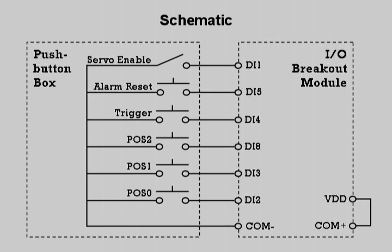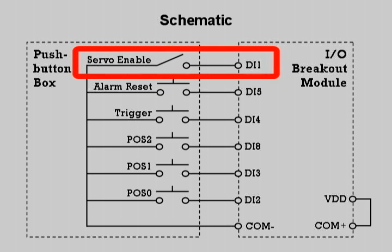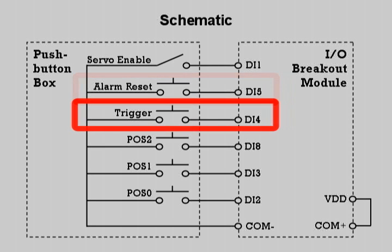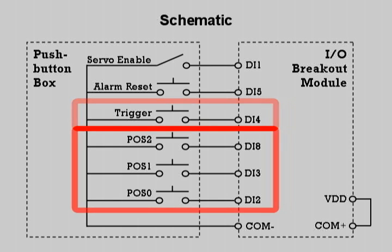Here is a schematic that shows our connections. For all the buttons and the switch, I've wired one leg of each to the COM minus connection. The switch is connected to digital input 1, this will be the servo enable. The black momentary button is wired to digital input 5, this will be the alarm reset button. The green momentary button is wired to digital input 4, this will be the trigger to actuate the moves. The three maintained buttons are wired to DI2, DI3, and DI8. These will be used to select from eight predefined positions.